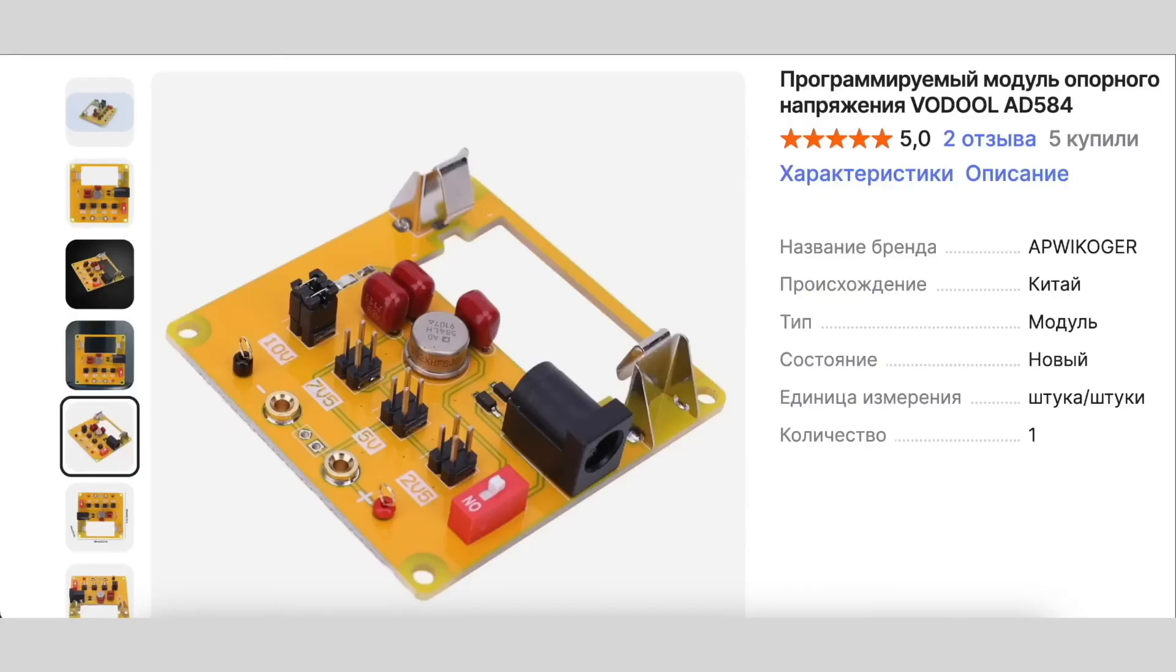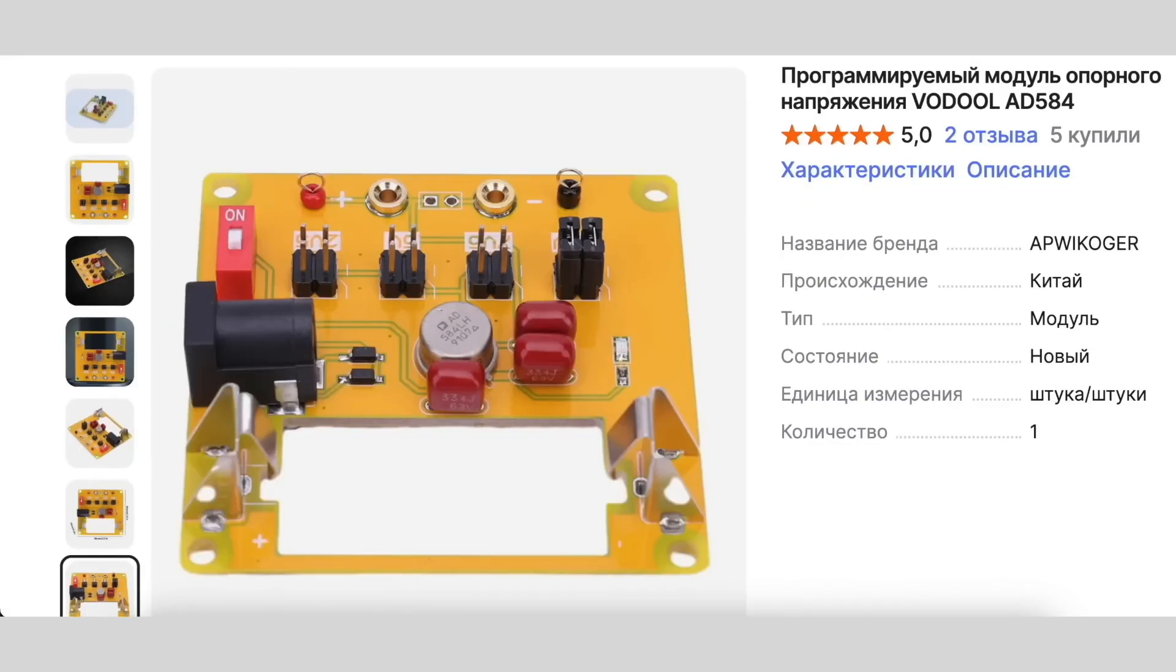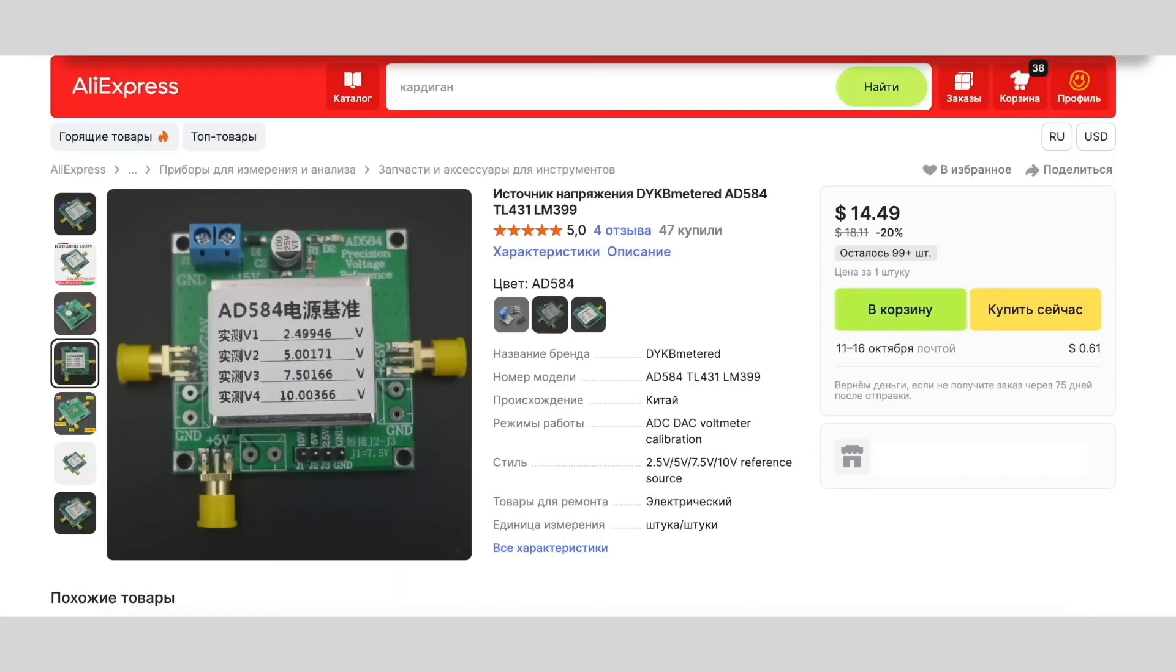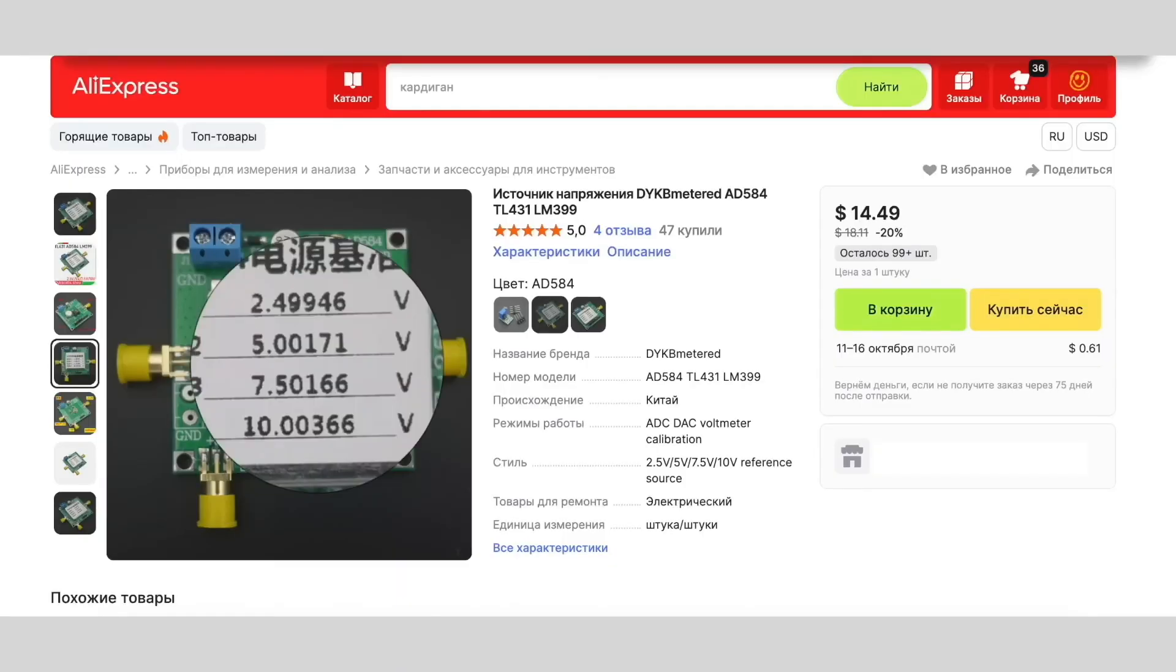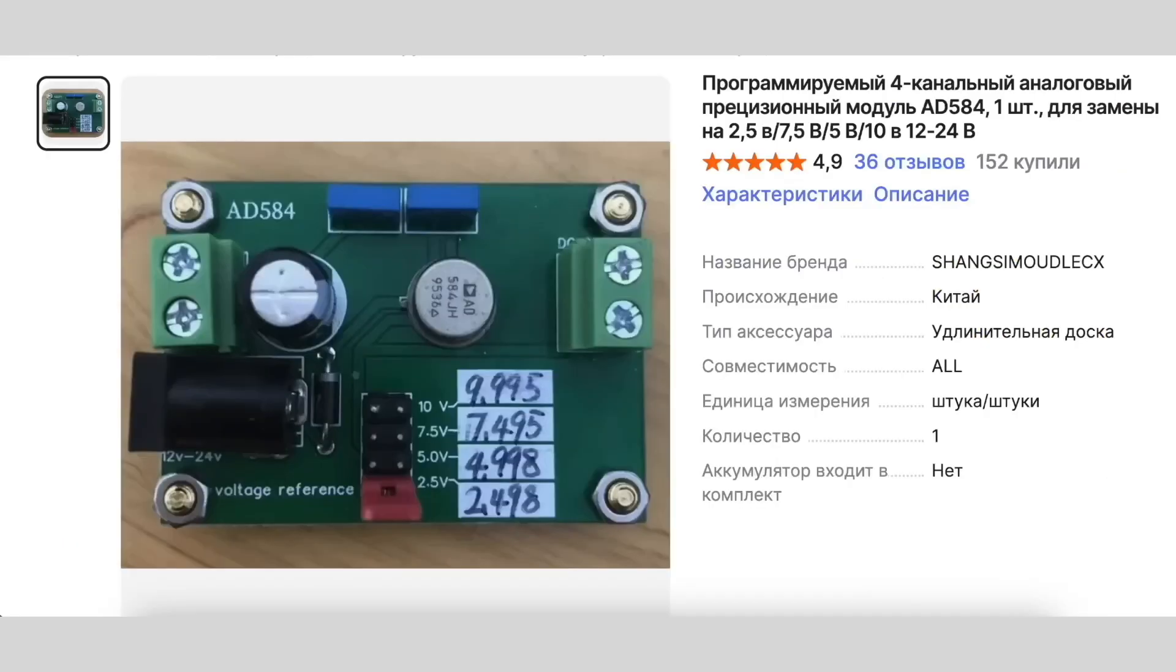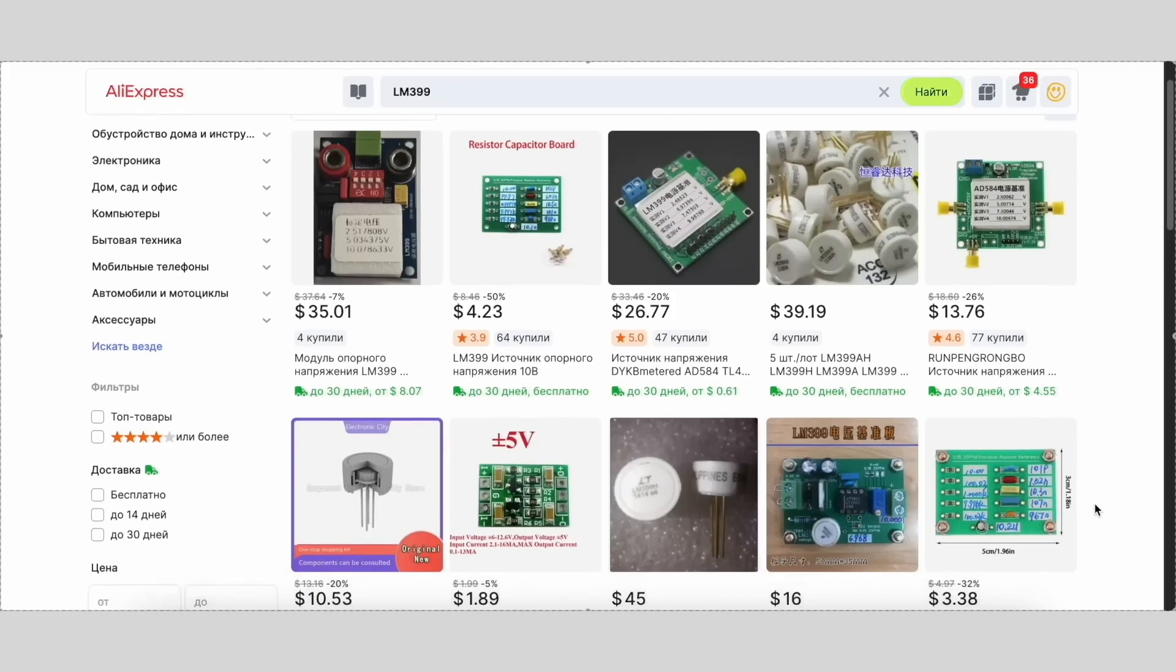There are also yellow boards with the 8584LH. They really are better, but often they're just remarked chips. The Chinese often write the voltage value right on the case after comparing it with a reference instrument. In that case, you can trust at least two or three decimal places.